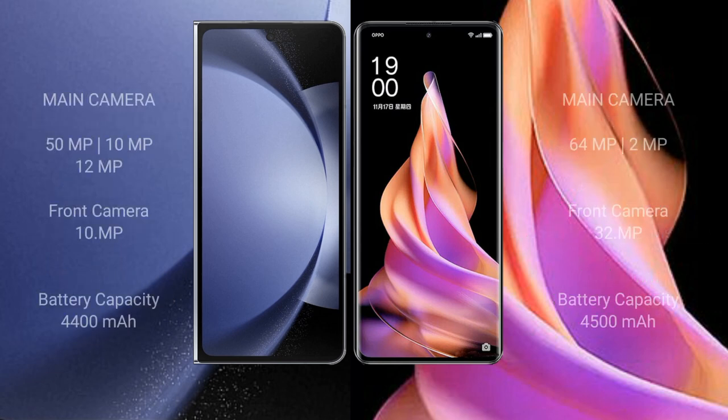Samsung Galaxy Z Fold 6 features a rear triple camera setup: 50MP plus 10MP plus 12MP, and a 10MP front camera. OPPO Reno 9 features a rear dual camera setup: 64MP plus 2MP, and a 32MP front camera.